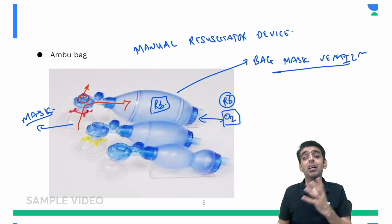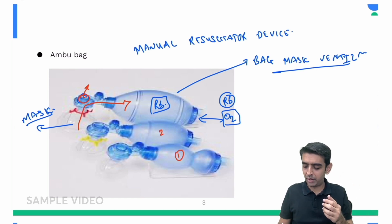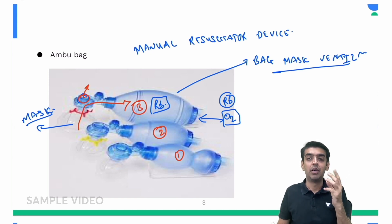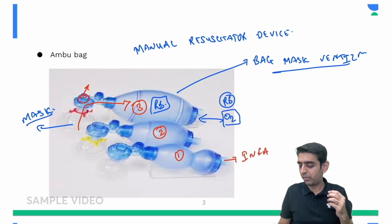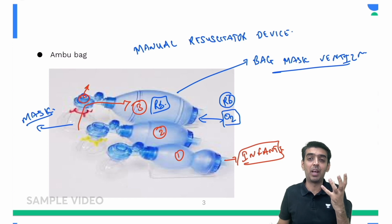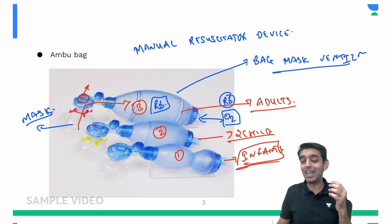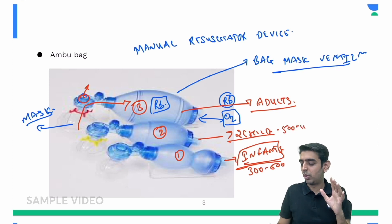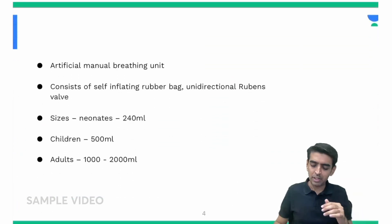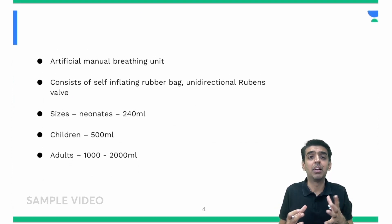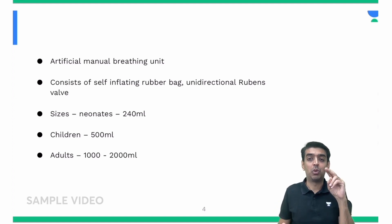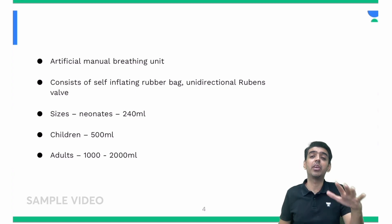There are three different sizes of bags. One is used for infants, with a volume of around 300 to 500 ml. The second is used for children, with a volume of around 500 ml to 1000 ml. The third is used for adults, with a volume of around 1000 to 2000 ml. It consists of a self-inflating bag with a unidirectional fish mouth valve, and it is a must in every OT and emergency setting.